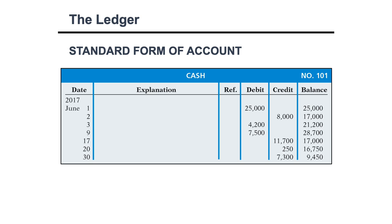In this slide you can see the ledger for cash. At the top we have the title, a column for date, a column for explanation if we need to add any instruction, a column for reference that we will ignore for now, a column for debit, a column for credit, and a column for the balance.